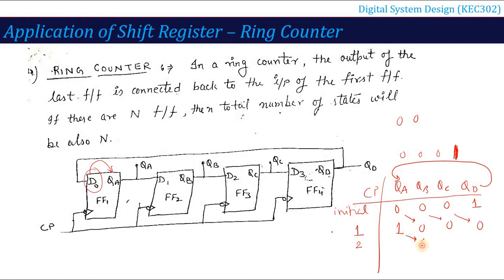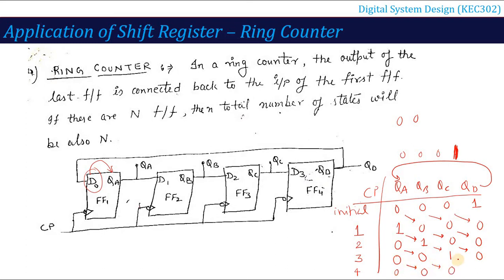On clock pulse 2, the 1 that was in QA shifts to QB, the 0s shift accordingly, and QD's value comes back to QA. On clock pulse 3, the 1 is now at QC; on clock pulse 4, it moves to QD and QD's output feeds back to QA. After 4 clock pulses we return to the same state 0,0,0,1 — proving the state repeats after n=4 clock pulses.